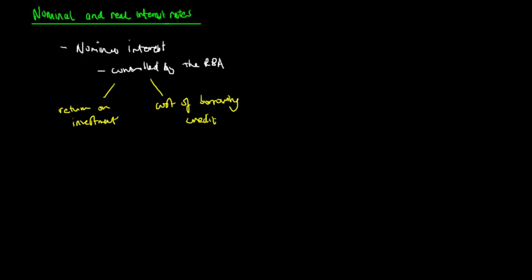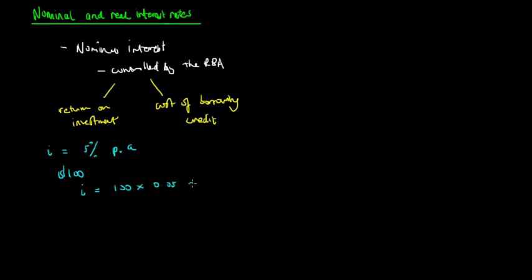To look at this simply in an example, we can say the interest rate I is 5%. So if you want to borrow $100, and this interest rate is 5% per annum, and we're only calculating simple interest, this would mean the interest paid will be equal to $100 multiplied by 0.05,